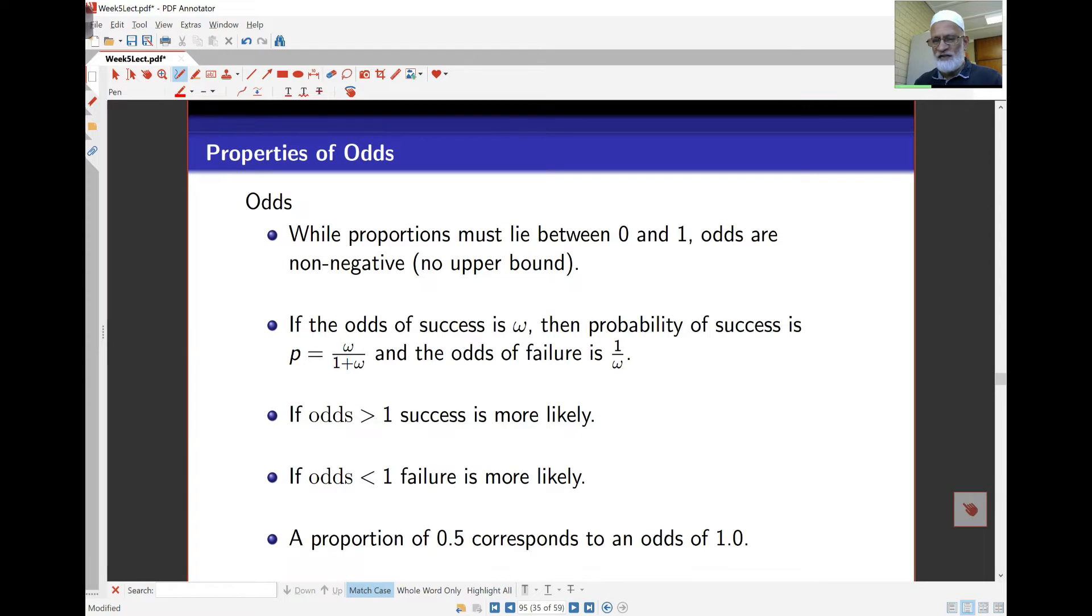If the odds of success is omega, then probability of success is actually omega over 1 plus omega. So if I put here omega as odds of success, that's p over 1 minus p. All I'm doing here is solving for p in this equation, you'll find p is omega over 1 plus omega. And because omega is a positive number, this probability always will be between 0 and 1.